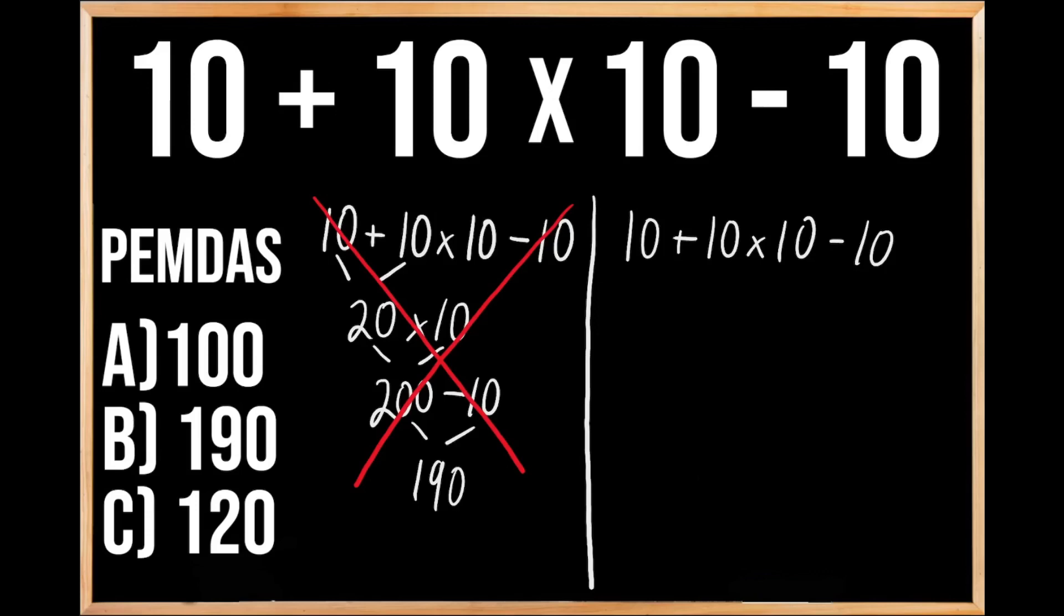The P stands for parentheses, and the E stands for exponents. And since we don't have either one of those, we're going to move on to our next priority of multiplication or division. And here we do have multiplication. So we're going to multiply 10 times 10, which we know gives us 100.